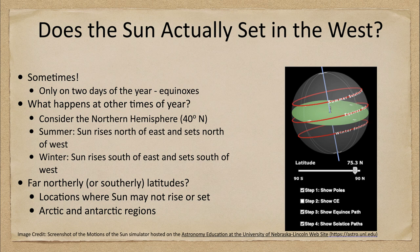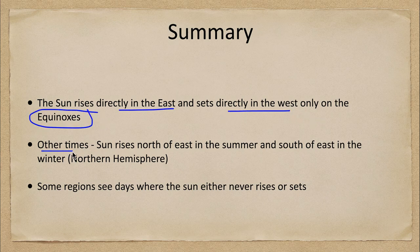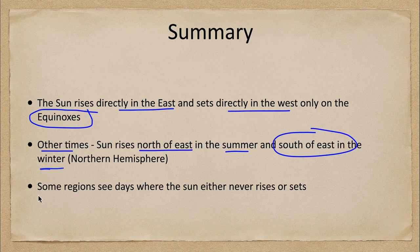Let's finish with a quick summary. The Sun does rise directly in the east and set directly in the west only on the two equinoxes. At other times, the Sun will rise north of east in the summer and south of east in the winter for the northern hemisphere. We also mentioned briefly that there are some regions that see days where the Sun will never rise or never set.